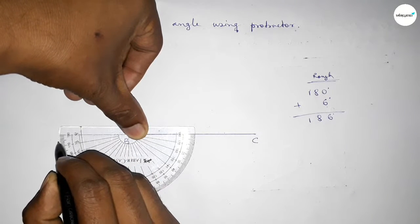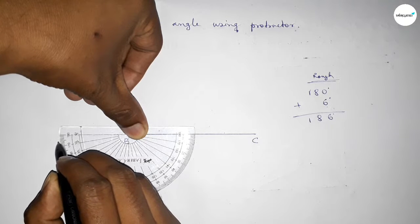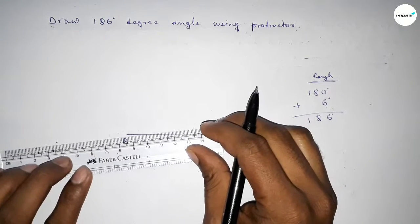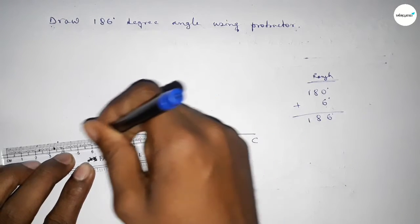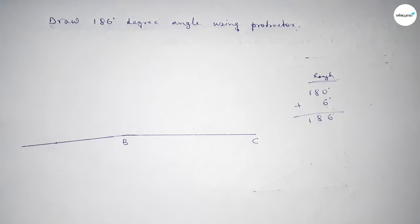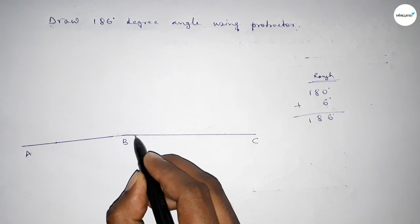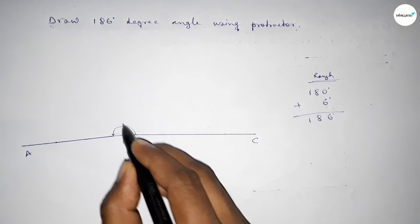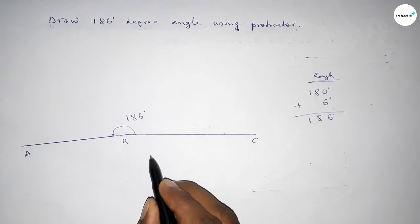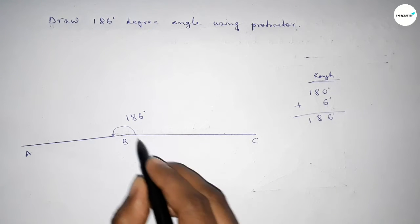By adding an extra 6-degree angle with 180 degrees, we can get a 186-degree angle. Now joining this side and taking here point A. So angle ABC up to this is 186 degrees.